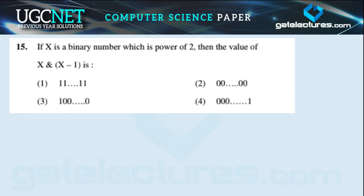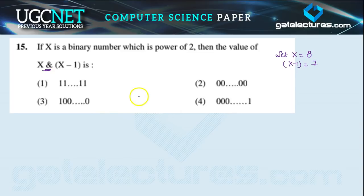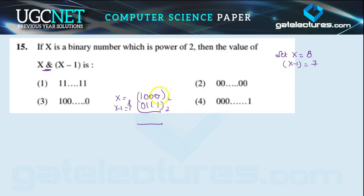Question number 15: if X is a binary number which is a power of 2, what is the value of X AND (X minus 1)? Let X equal 8. Then X minus 1 equals 7. In binary, 8 is 1000 and 7 is 0111. Applying the AND operation: 0 AND 1 = 0, 0 AND 1 = 0, 0 AND 1 = 0, giving the result 0000. So the answer is 0, option 2.